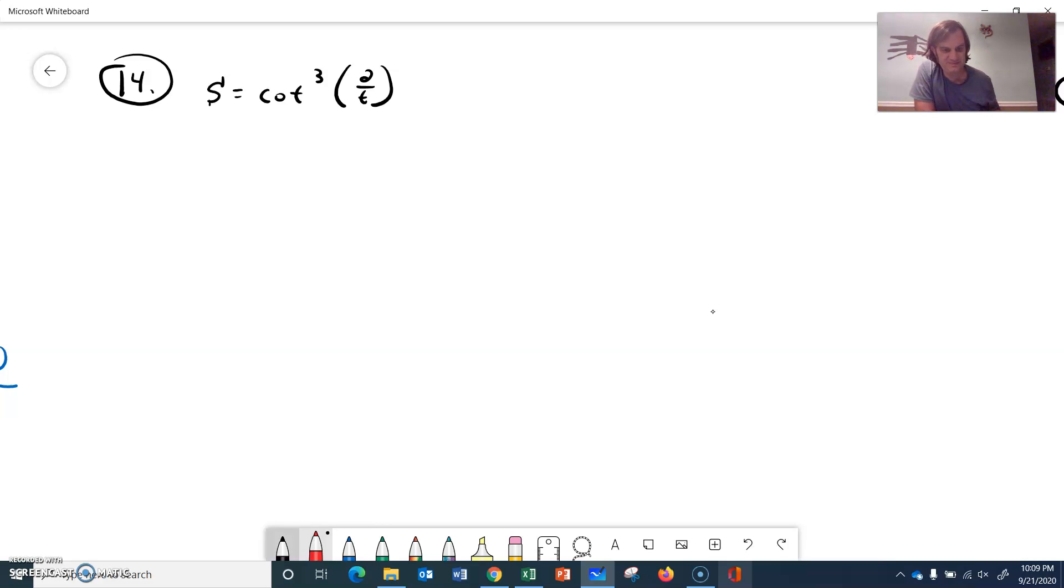14 is S equals the cotangent cube of 2 over T. I'm going to rewrite this. So I'm going to rewrite it as S equals cotangent cube, I'm going to put that in a big old block so it's obvious that I'm going to do some type of chain rule. And 2 over T, I'm going to rewrite that as 2 times T to the negative 1. So the main thing I've got here when I go to do a derivative is I'm going to use a chain rule, but the main thing I've got here is a power rule. So I've got a 3. Excuse me, I've got something cube.